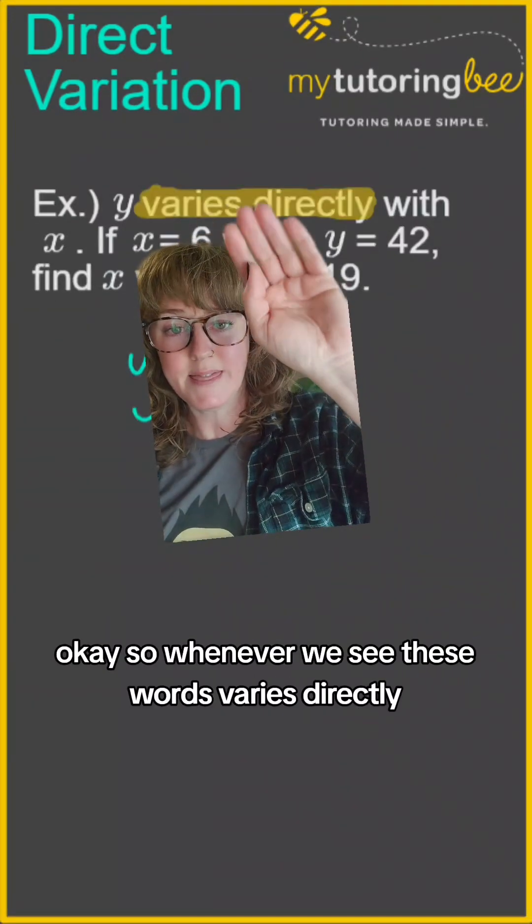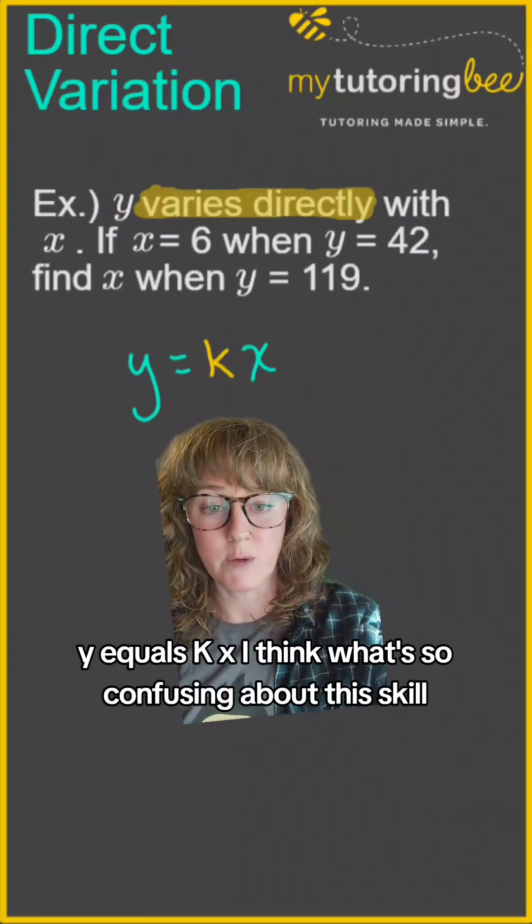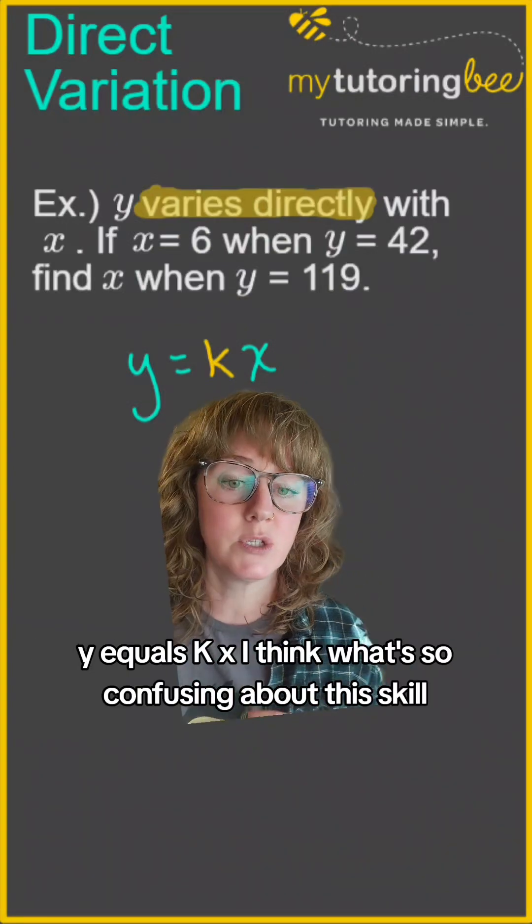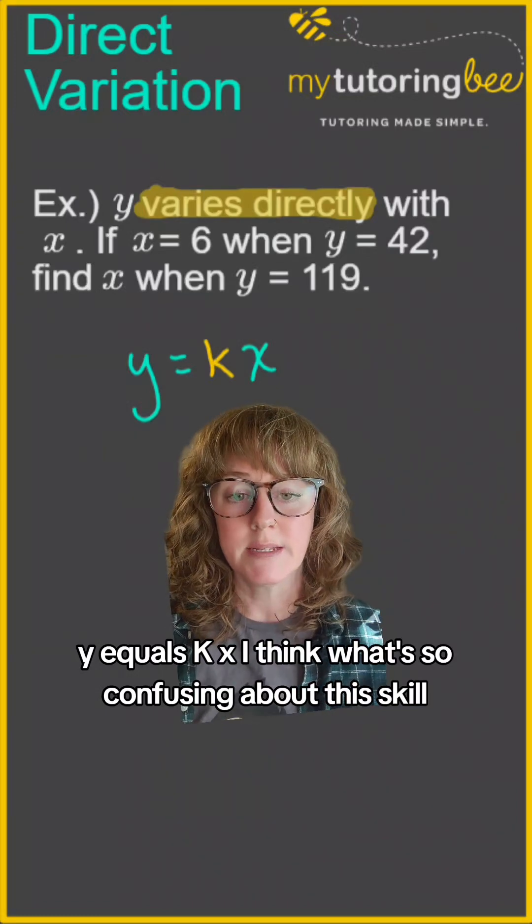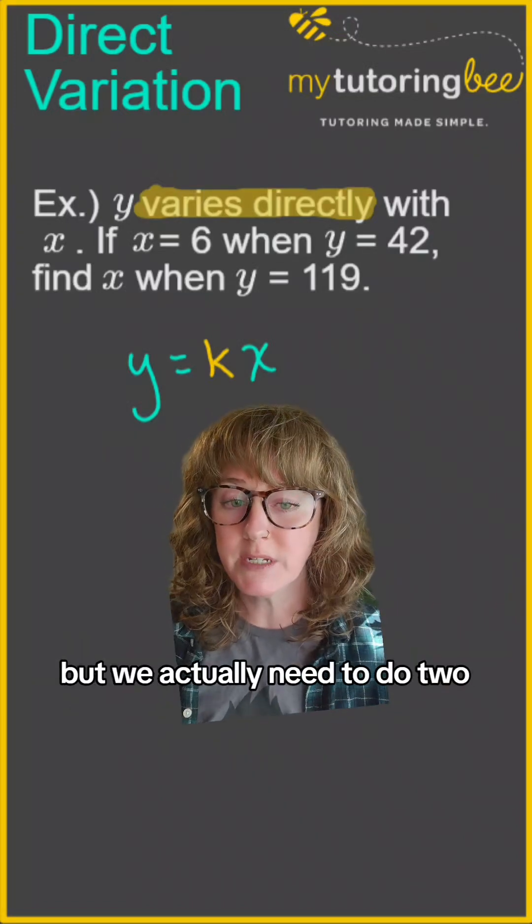Whenever we see these words varies directly, we're going to use this formula: Y equals KX. I think what's so confusing about this skill is that students are expecting to just need to do one equation, but we actually need to do two.